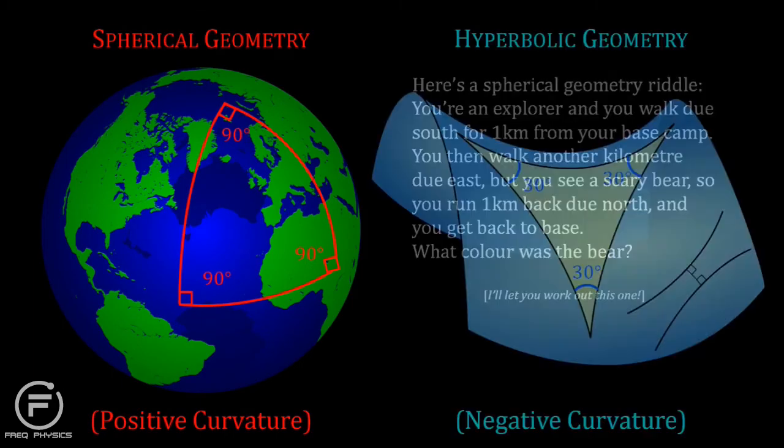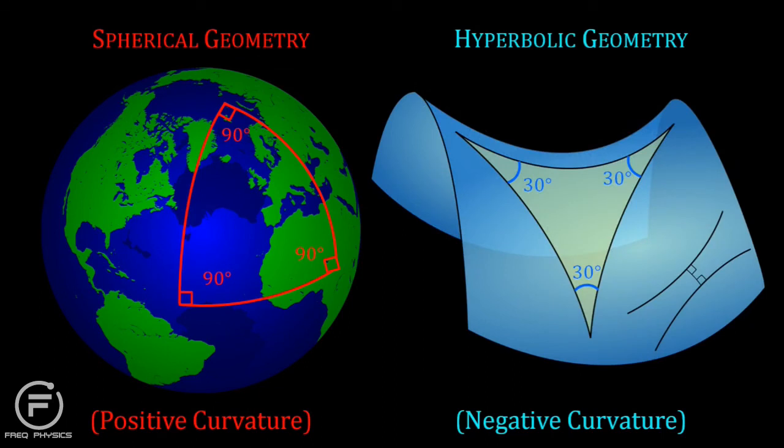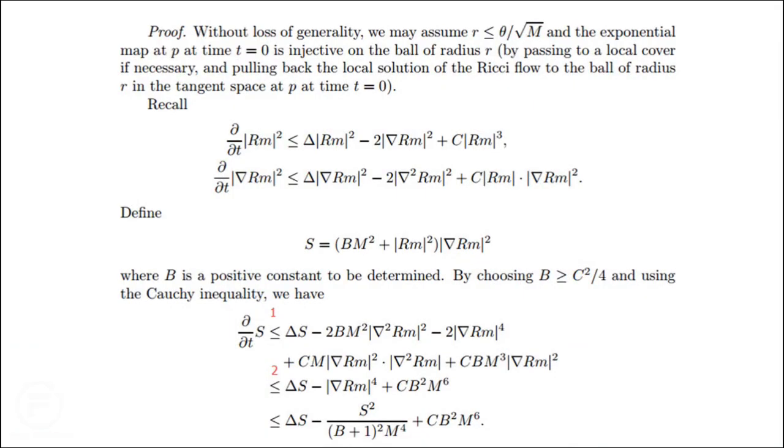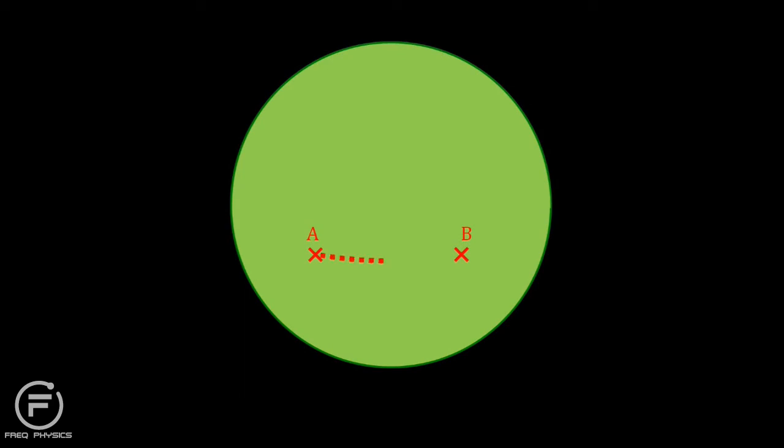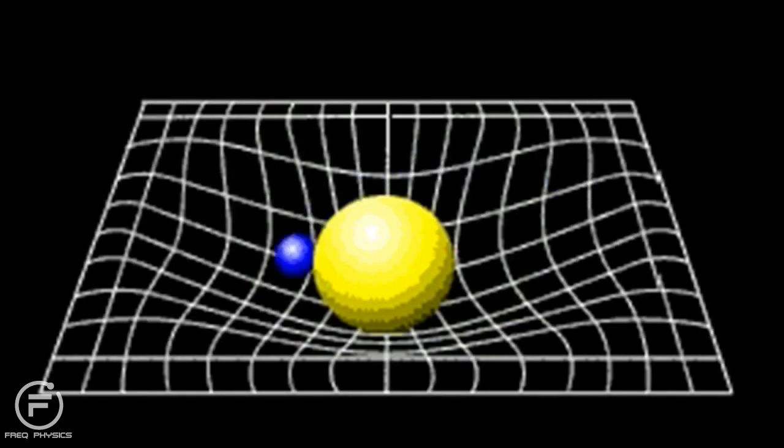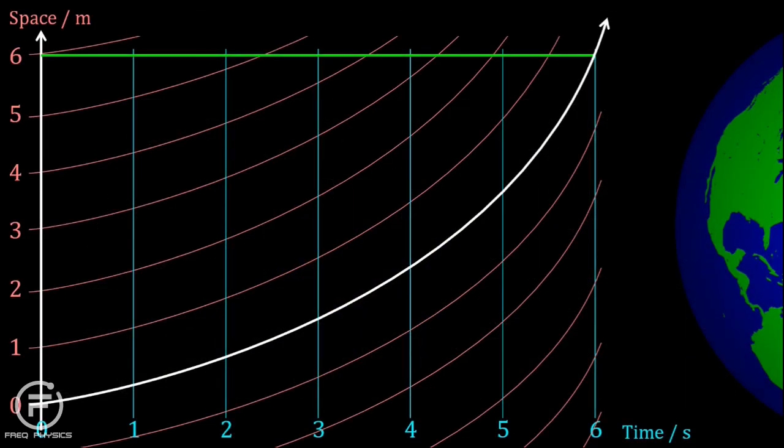Bernhard Riemann used some rather tricky maths to generalise this to any number of dimensions, but the basic idea is the same. On a sphere, a straight line, the shortest distance between two points, is a section of a great circle which is actually curved. Similarly, the curved orbits followed by objects in gravitational fields are equivalent to straight lines in the curved geometry of space-time. Remember the straight line on the graph still produces acceleration.